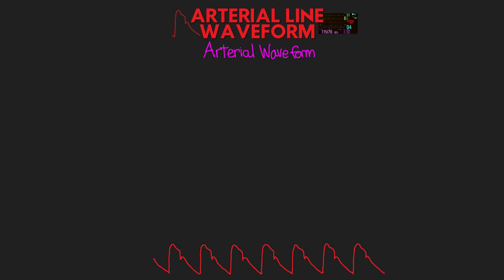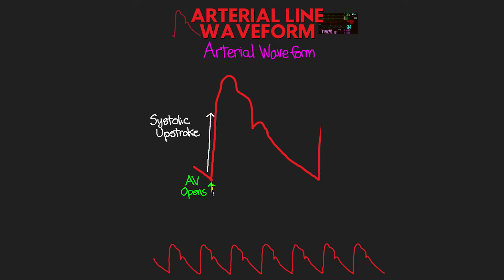Here is an example of a basic arterial pressure tracing. There are a few parts of this that I want you guys to know. First is going to be the large rapid upward tracing. This is what we call the systolic upstroke. This is formed by the rapid increase in arterial blood pressure as the heart is ejecting blood. Where the waveform begins its rise is where the aortic valve actually opens and marks the beginning of systole. The peak of this wave is the peak systolic pressure — this is what's going to register as our patient's systolic blood pressure, or SBP. This is the highest pressure at the strongest point of contraction of the left ventricle.